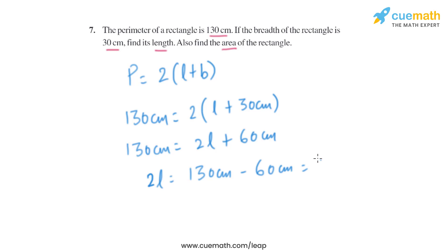From here, we get the value of L, which is 70 centimeters divided by 2, equal to 35 centimeters. So that will be the length of the rectangle.